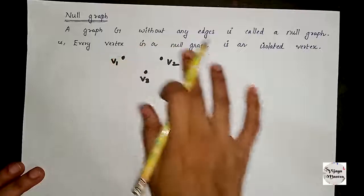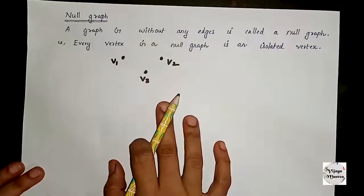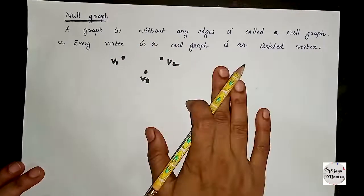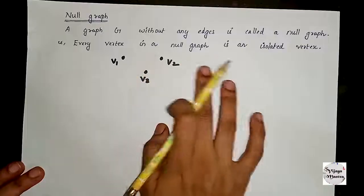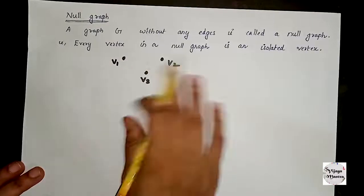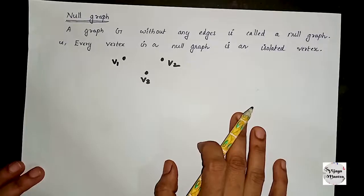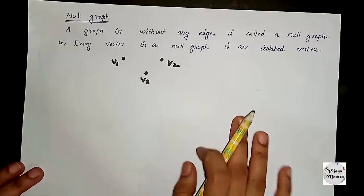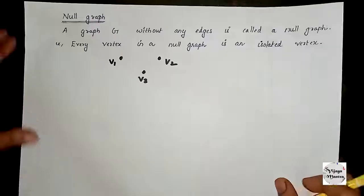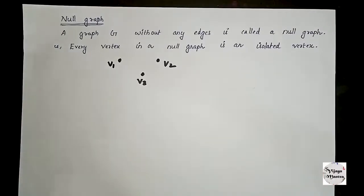In a null graph, no edges are connected between vertices — the vertices are all isolated with no edges present. I will see you in the next video.